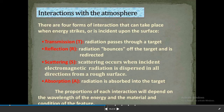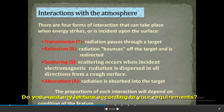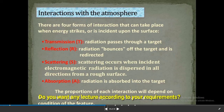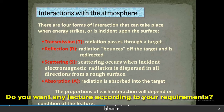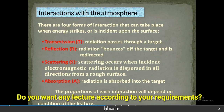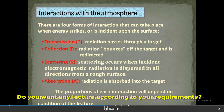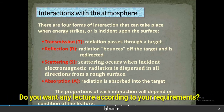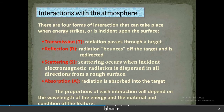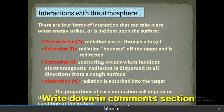Regarding interactions with the atmosphere, there are four forms of interaction that can take place when energy strikes a surface. Number one is transmission — radiation passes through a target. Number two is reflection — radiation bounces off the target and is redirected. Number three is scattering — incident electromagnetic radiation is dispersed in all directions from a rough surface. Number four is absorption — radiation is absorbed into the target. The proportions of each interaction depend on the wavelength of the energy and the material and condition of the feature.